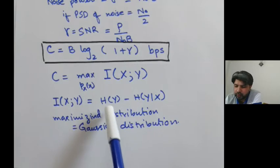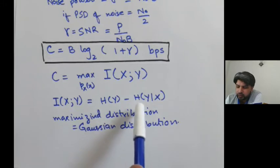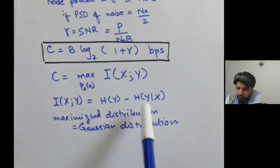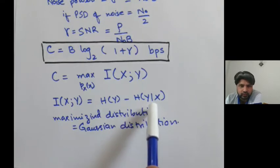Which was derived by computing H of Y, or differential entropy of a random variable, also computing what H of Y given X are for Gaussian distributions.